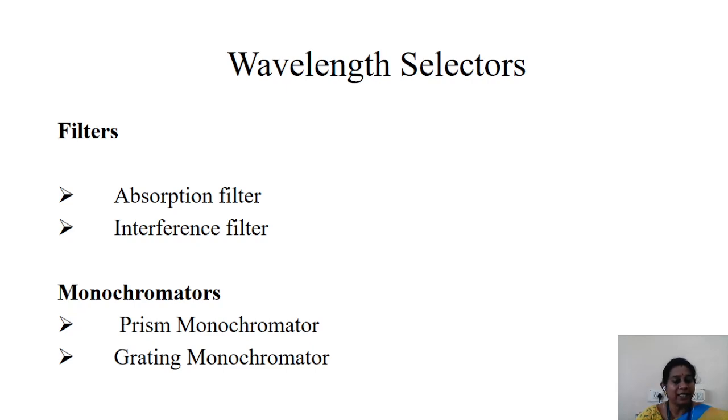The two main requirements of a filter are it should have high transmittance at the desired wavelength and it should have low transmittance at other wavelengths. The types of filters are absorption filter and interference filter. In this lecture session we'll discuss about the construction of these filters and their working.